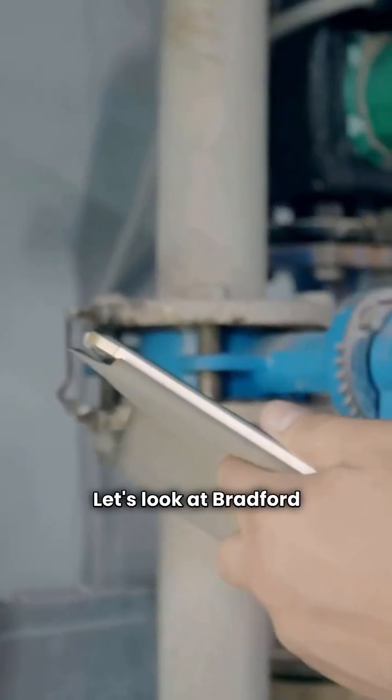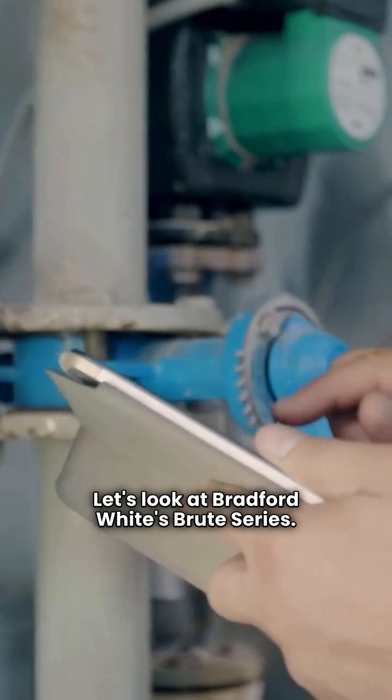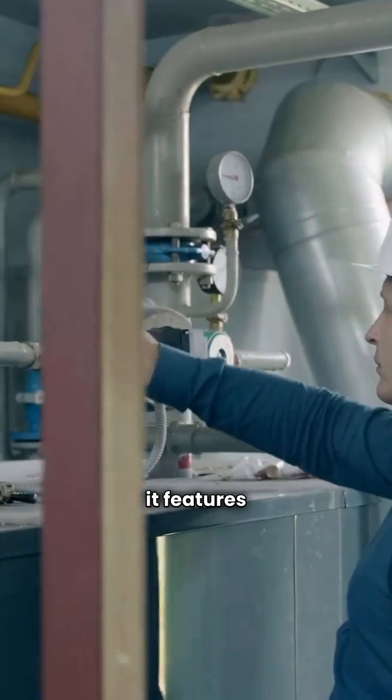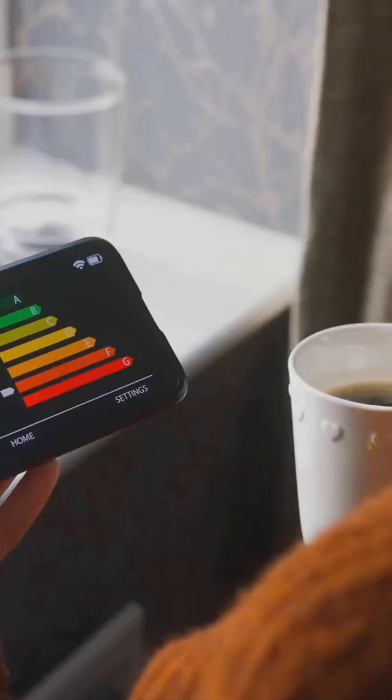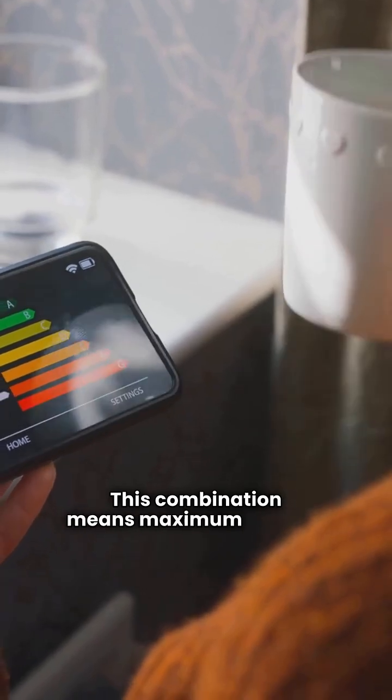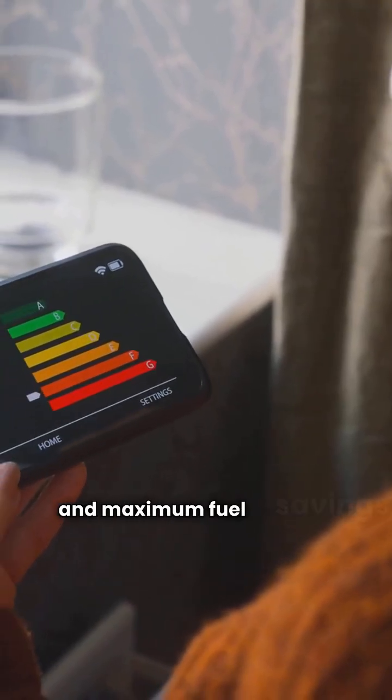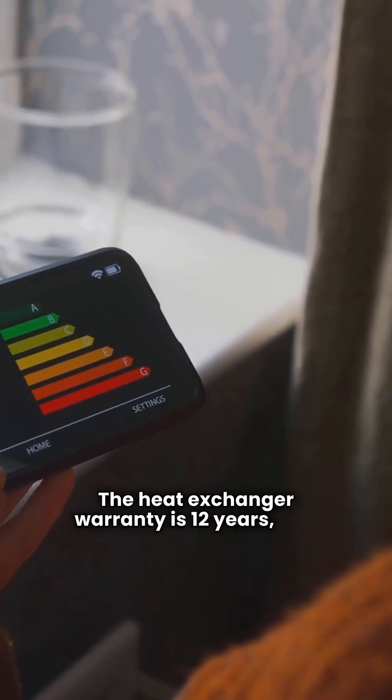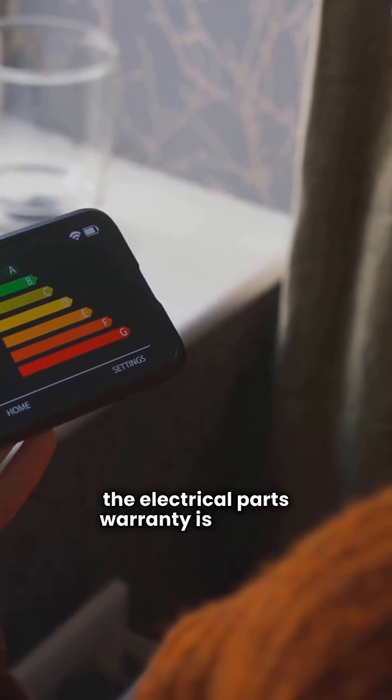Let's look at Bradford White's Brute series. This unit is a premium option. It's a condensing boiler, and it features modulating control. This combination means maximum comfort and maximum fuel savings. The heat exchanger warranty is 12 years, and the electrical parts warranty is 2 years.